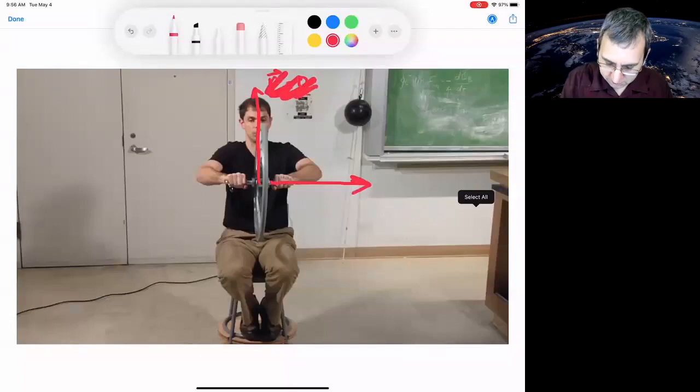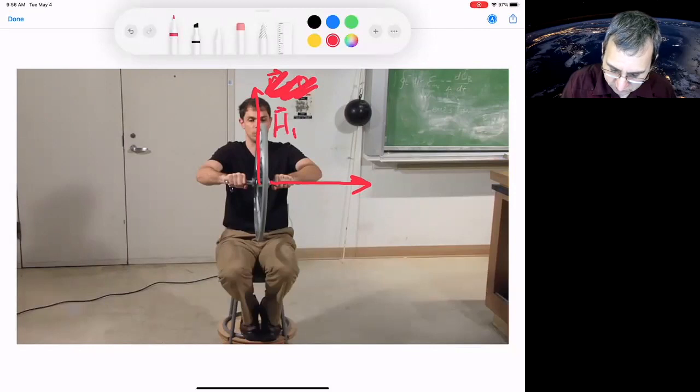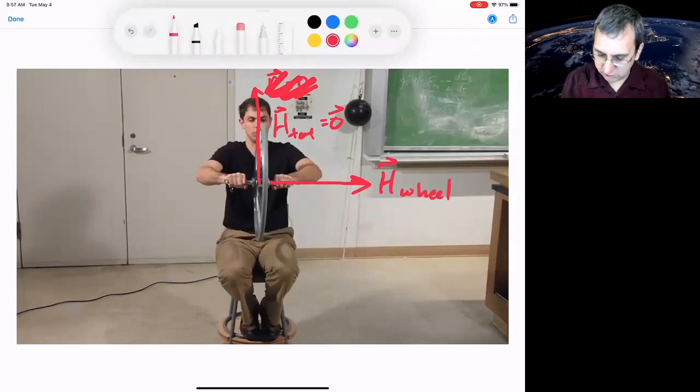I put L. This shouldn't be L. This is H. Didn't I call it H? Yeah, there. So this H total is zero. But here we've got H for the wheel, and it's pretty large. But because the total angular momentum, at least in the vertical direction, is zero,